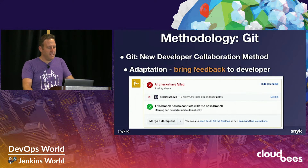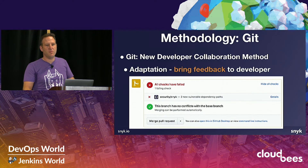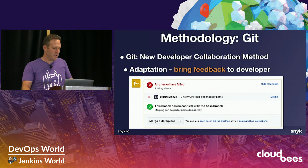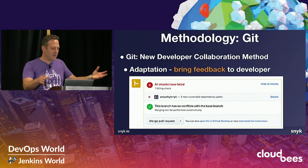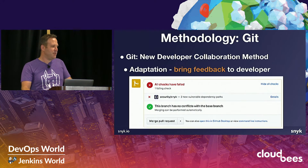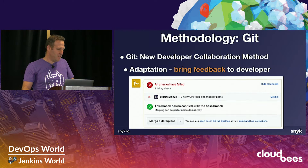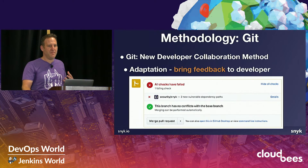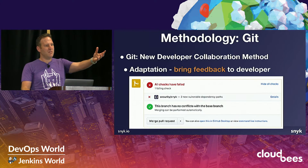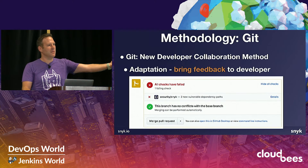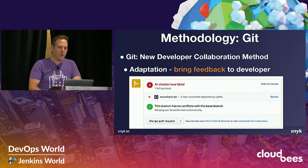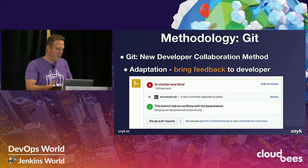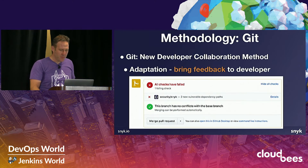Another methodology introduced in the DevOps world is Git. Developers use this fantastic developer collaboration method — GitHub or the likes. The adaptation here is companies like Snyk bringing feedback to the developer where the developer already is — at GitHub. Instead of asking them to come to our dashboard and observe vulnerabilities, we put a check status and can flag pull requests that introduce new vulnerabilities, without having the developer come to our tool.